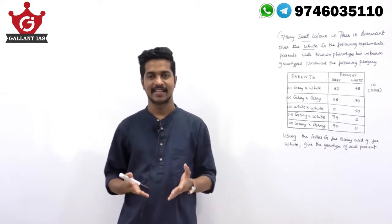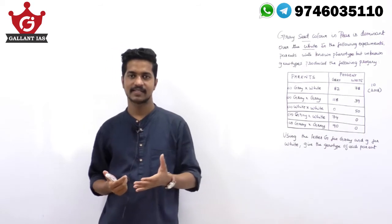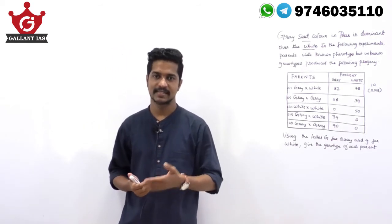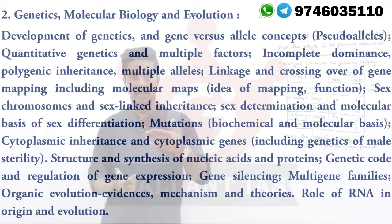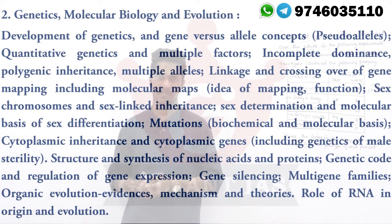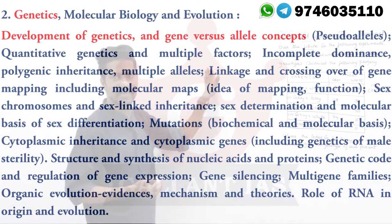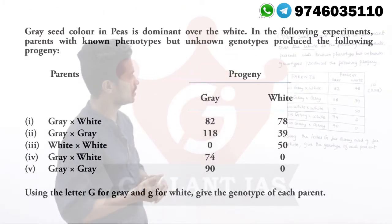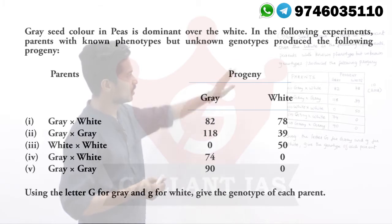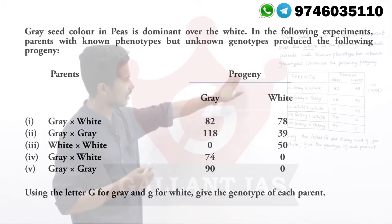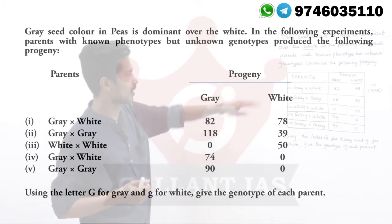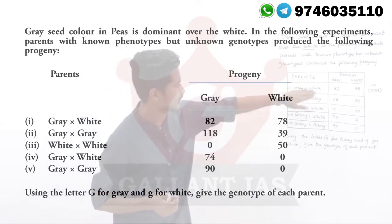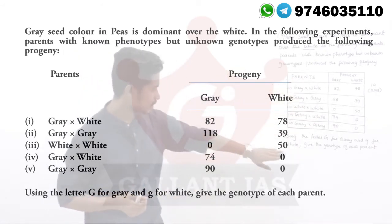Hi all, welcome to Galen IA's Botany Option program. Today we are discussing a previous year question from the 2018 Civil Service Mains exam. The question is from Unit 2 of Paper 2, from the genetics part. The question is: gray seed color in peas is dominant over white. In the following experiments, parents with known phenotypes but unknown genotypes produce the following progeny.